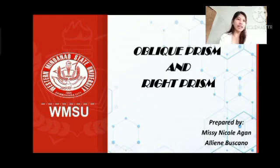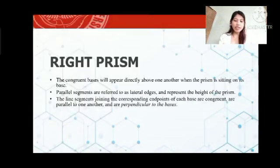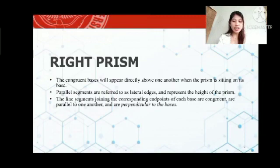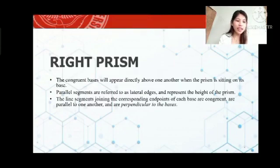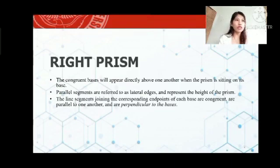Good day everyone. I will be reporting about right prisms. A right prism is one where the congruent bases appear directly above one another when the prism is sitting on its base. The parallel segments are referred to as lateral edges and represent the height of the prism. The line segments joining the corresponding endpoints of each base are congruent, parallel to one another, and perpendicular to the bases.